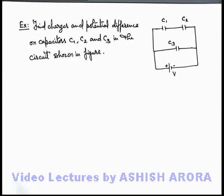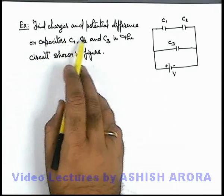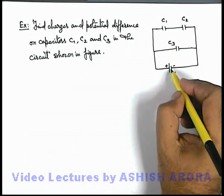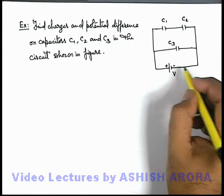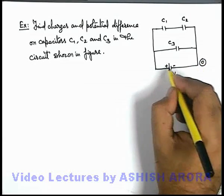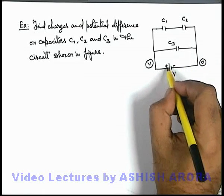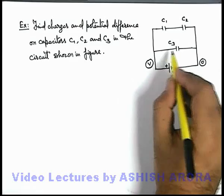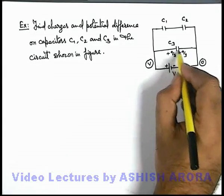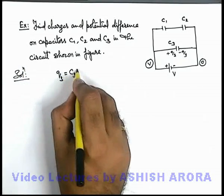Let us discuss an example on capacitive circuit analysis. We are given a circuit and required to find the charges and potential differences on capacitors C1, C2, and C3. A battery potential difference V is applied across the system. If we consider the negative side at zero volts and the positive side at V volts, the positive terminal connected to capacitor C3 will apply a potential difference V across its plates, so charge +Q3 and -Q3 will be supplied on capacitor C3.